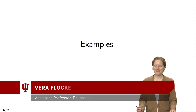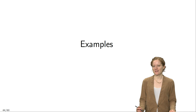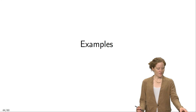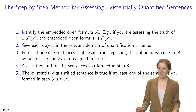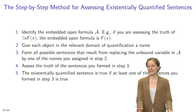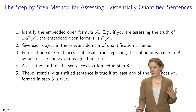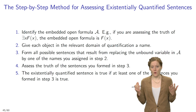We talked about FOL interpretations and about truth on FOL interpretations. In this part of the lecture I want to discuss some of the examples that came up in the previous part in a little more detail. Here's a step-by-step method that you can use for assessing the truth of existentially quantified sentences on a given interpretation. The method proceeds in four main steps.